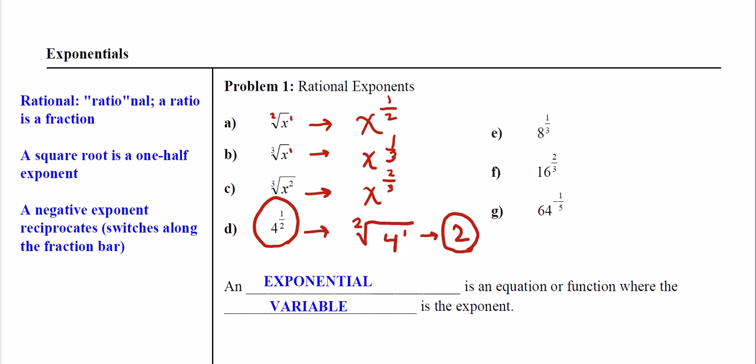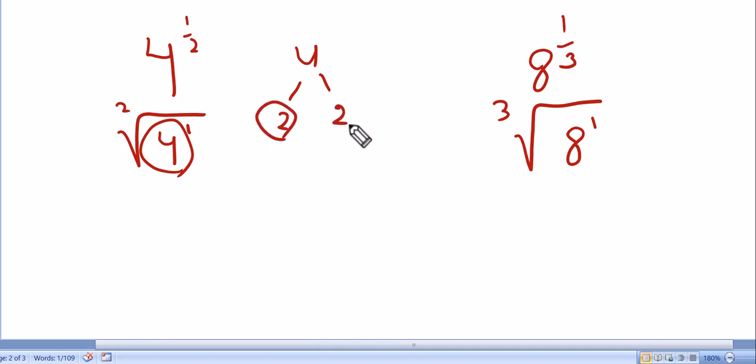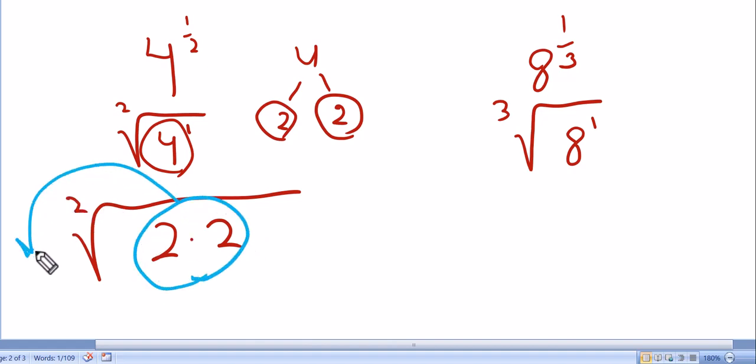E, 8 to the 1 third. Let's compare this. So we said 4 to the 1 half was the same as this, correct? So we can rewrite 8 to the 1 third as this. Now, how do we know that this was equal to 2? Well, here's why. You do a factor tree on this number. That's 2 times 2 on the inside. And what happens is that this number on the outside tells me how much of a group I'm looking for. So I'm looking for groups of 2s, so I'm looking for pairs. Here's a pair of 2s, and it comes out once. And so that's why the square root of 4 was 2.